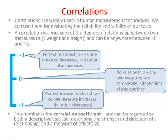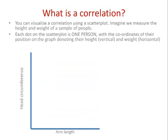In terms of conceptualising what a correlation actually means, the best way is to think of a scatter plot. I've chosen a concrete example of two variables: head circumference and arm length. Each dot on this scatter plot is one person. In pretty much everything we do in psychology when looking at correlations, the dots on the scatter plots are people.